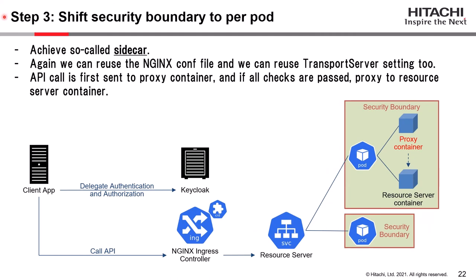Step 3 is to shift the security boundary to per port, which I believe is the general grain size of a Zero Trust network. This is achieved by the so-called sidecar pattern. Again in this step, we can reuse the NGINX configuration and the Transport Server settings. NGINX Ingress Controller only passes through API calls, and proxy containers play the role of API gateway and proxy API calls to the resource server containers. An API call is first sent to the proxy container, and if all checks pass, it is proxied to the resource server container. The security boundary grain size becomes per port.